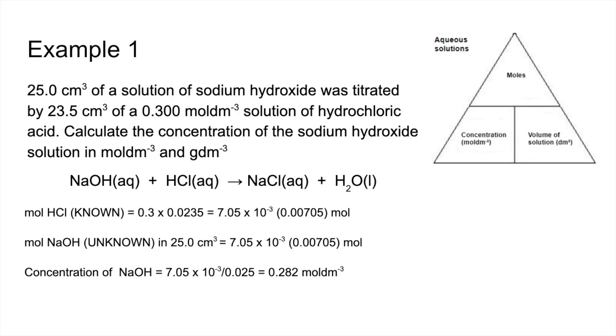And finally to get the concentration in grams per decimetre cubed, we're going to bring in another formula. So it's the formula for solids now. So mass equals moles times molar mass. Well, we've just calculated the moles per decimetre cubed. So to get the grams per decimetre cubed, it's just moles times molar mass or MR of the NaOH. So it's 0.282 times 40, 11.28 grams per decimetre cubed.